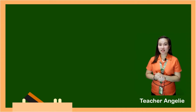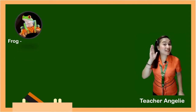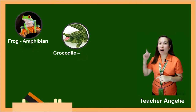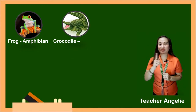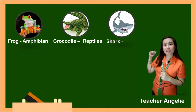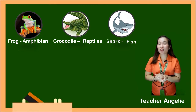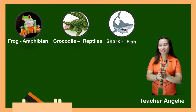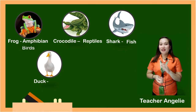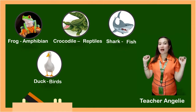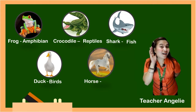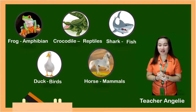In what classification does the frog belong? Very good! How about the duck? The duck belongs to the classification of birds. And how about the horse? Very good! The horse belongs to the classification of mammals.